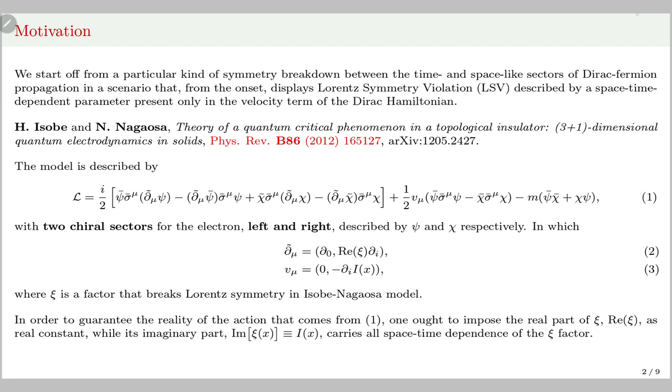Here Lorentz symmetry violation happens in two places. First by a constant multiplying this partial part of the full derivative operator, and secondly due to the presence of a space-time anisotropy described by the presence of this vector v.